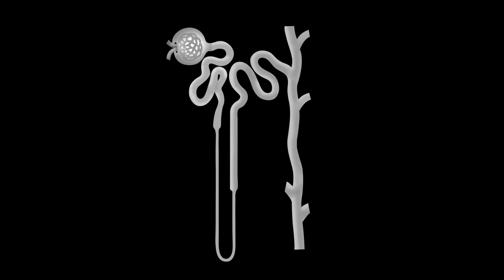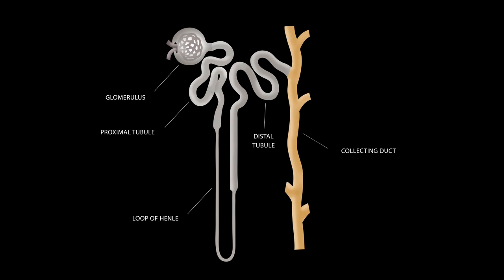The nephron is made up of several different parts. It starts off with the glomerulus, moves to the proximal convoluted tubule, down to the loop of Henle, to the distal convoluted tubule, and the collecting duct. All of those are your five answer choices.